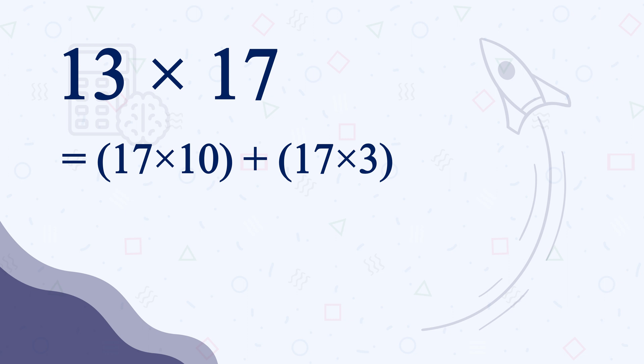You don't need to write it. Always do this split and merge thing inside your head. I have already shown you how easy it is to calculate 10 times of any number. Just putting a 0 at the end, right? So 10 times of 17 is 170 and 3 times of 17 is 51.